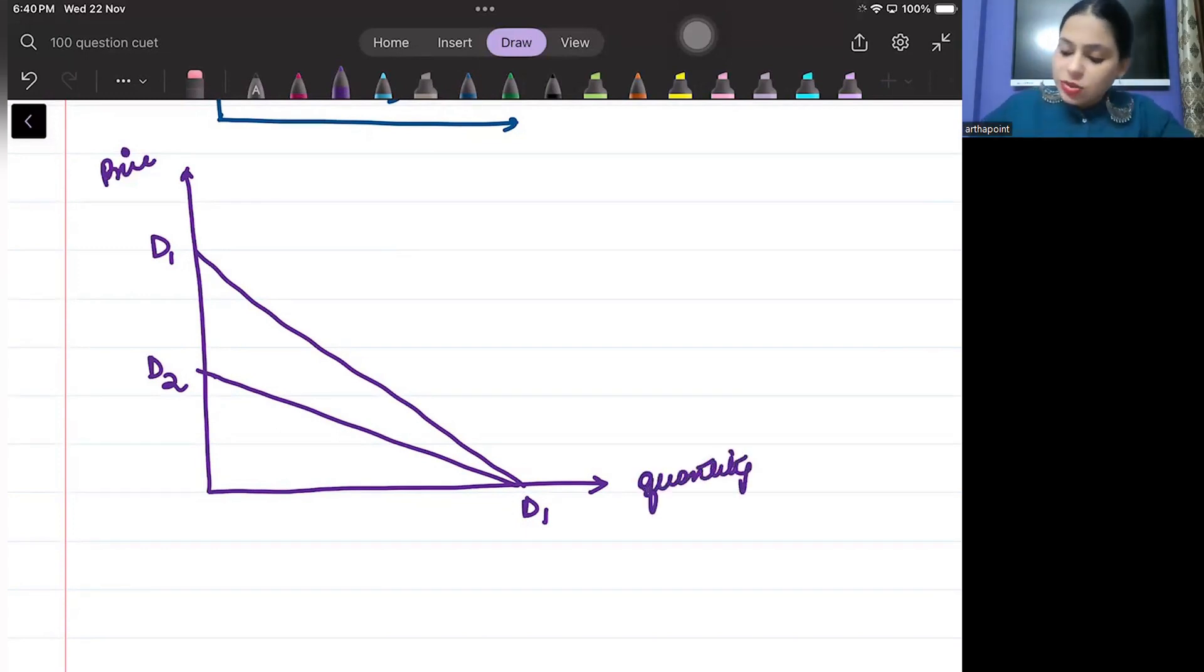But what I am doing is, I am taking a particular price. Earlier on this price, the quantity was this Q1. First, I am taking a particular quantity Q1 demand.